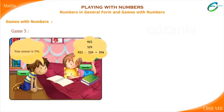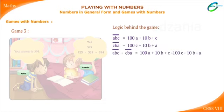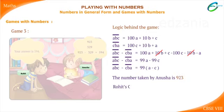Anusha (surprised): Rohit, you've also become good with tricks! Let us see the logic. ABC = 100A + 10B + C. CBA = 100C + 10B + A. Taking the difference: ABC − CBA = (100A + 10B + C) − (100C + 10B + A) = 99A − 99C = 99(A − C). So the result is always a multiple of 99. For Anusha's number 923: 99 × (9 − 3) = 99 × 6 = 594.